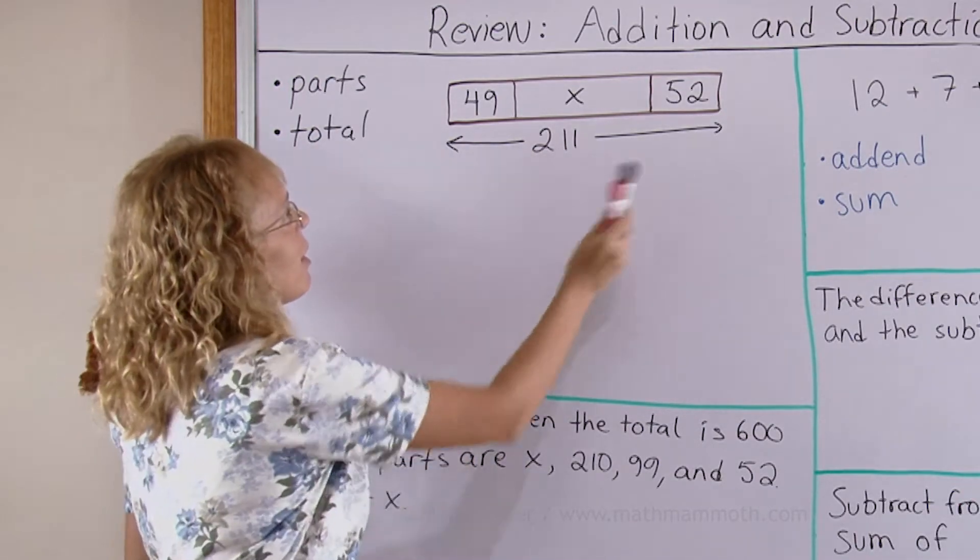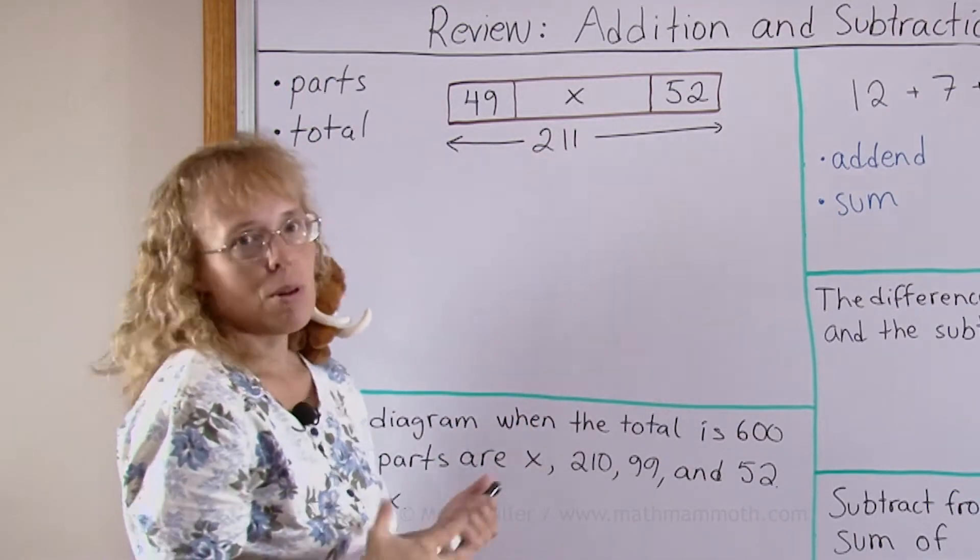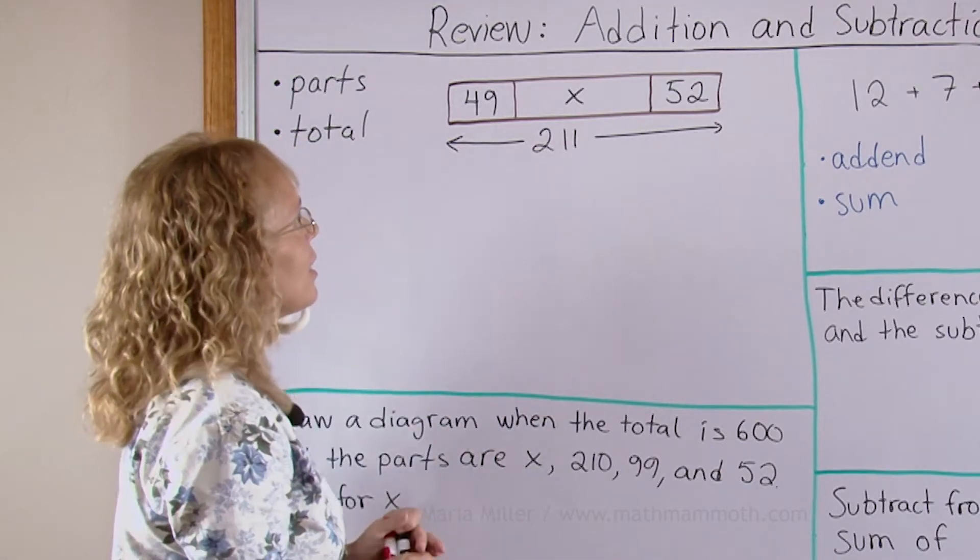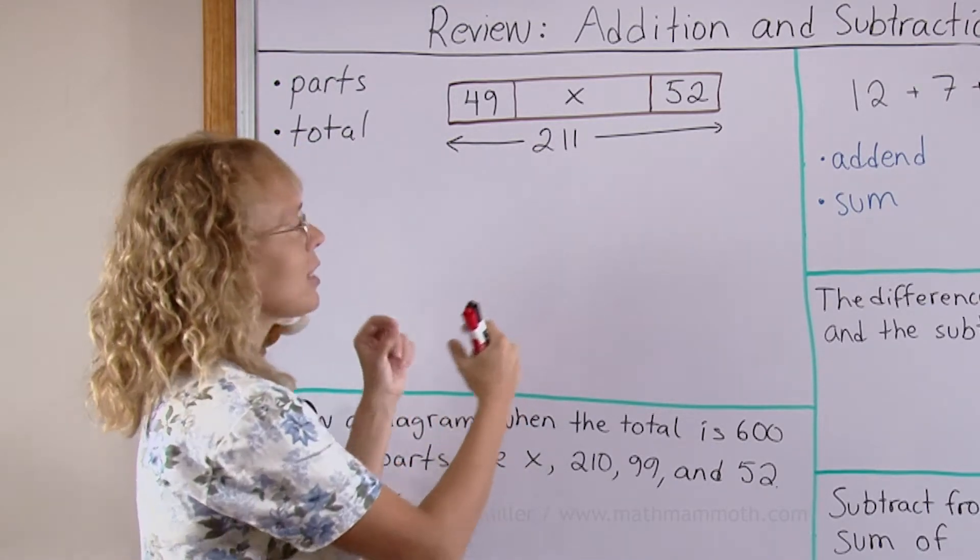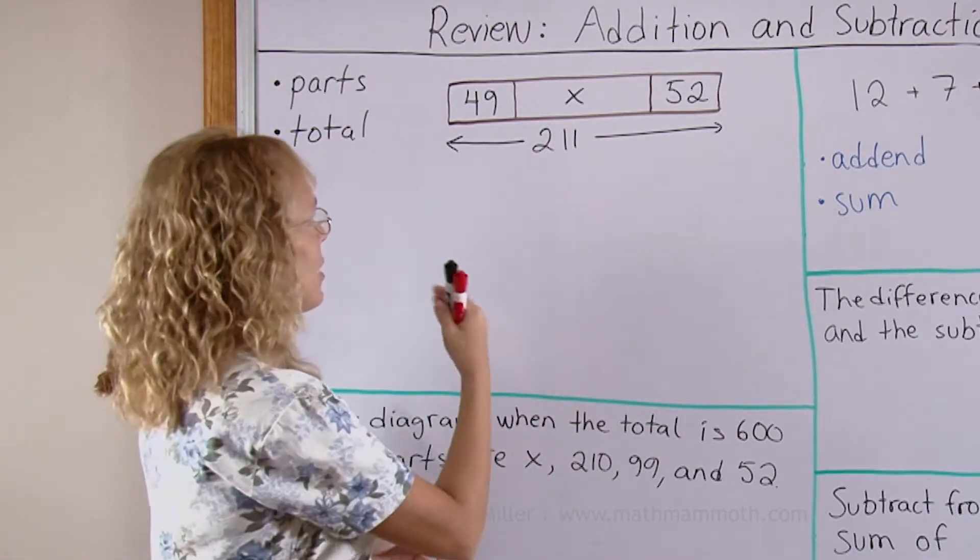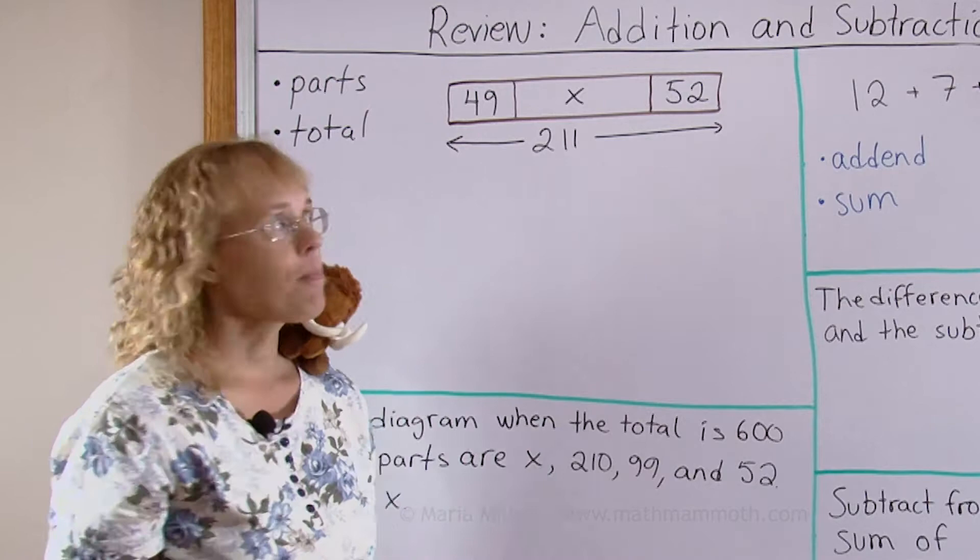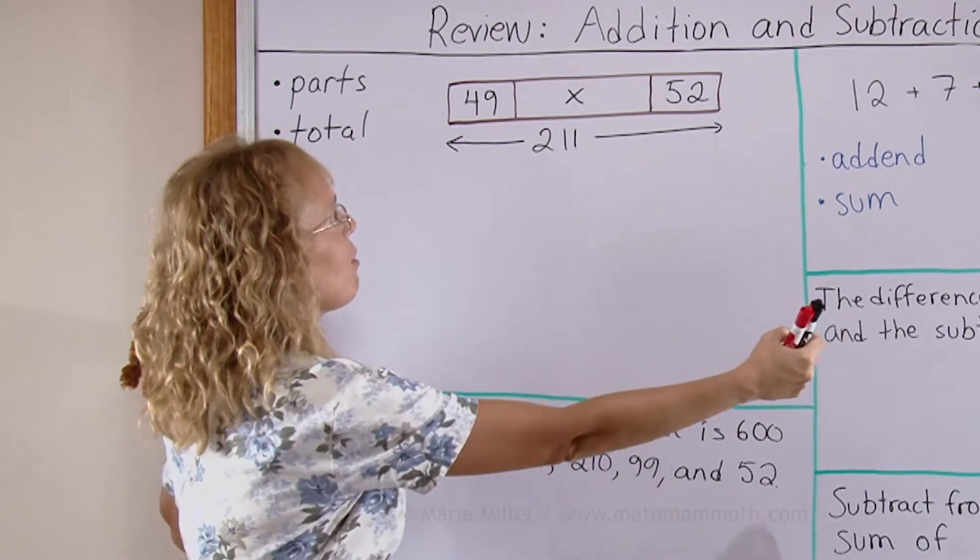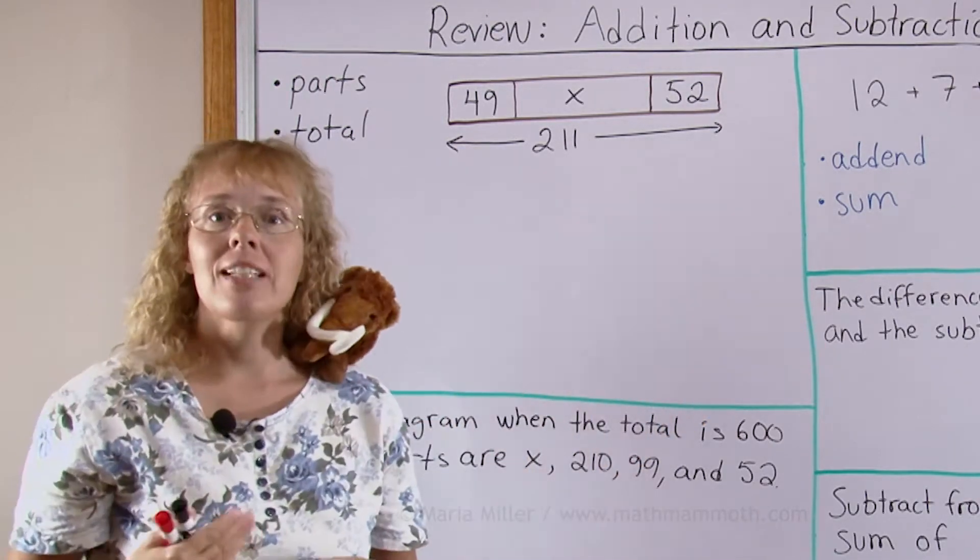And this bar diagram here or block model illustrates that. Here we have, you can think of it as a board of a certain length that would be divided into three parts. The parts are 49, x and 52. And the total length of the board is given here, it is 211.